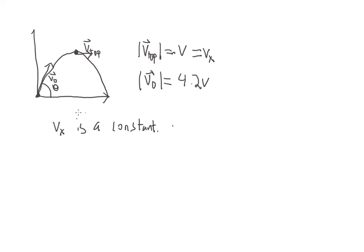That means the x component at the beginning is going to be equal to vx. So we also know that the magnitude of v naught times the cosine of the angle is going to be equal to vx, and that is equal to the magnitude of v top.